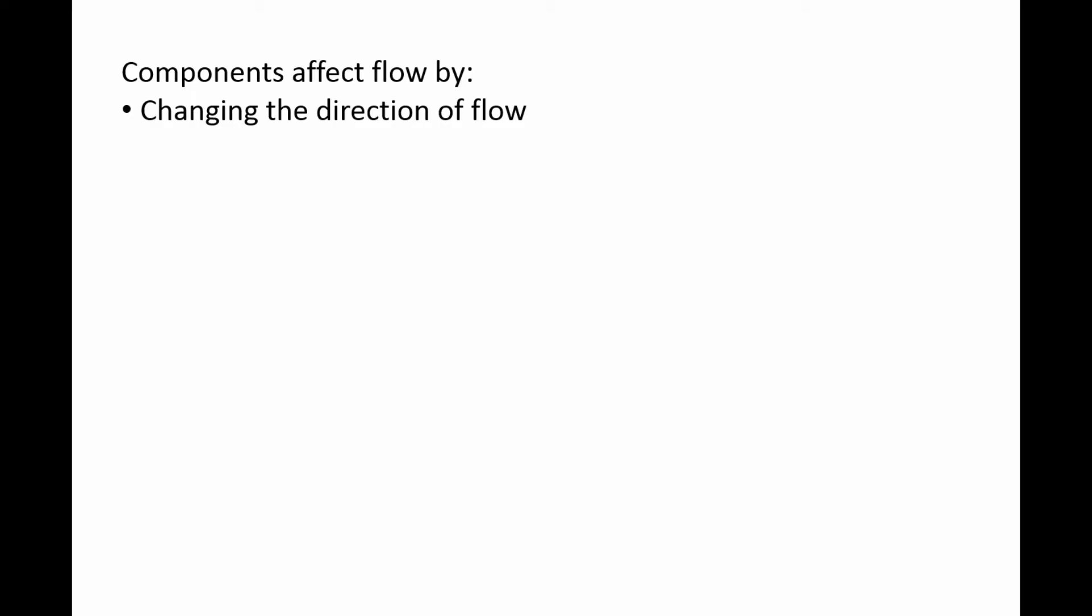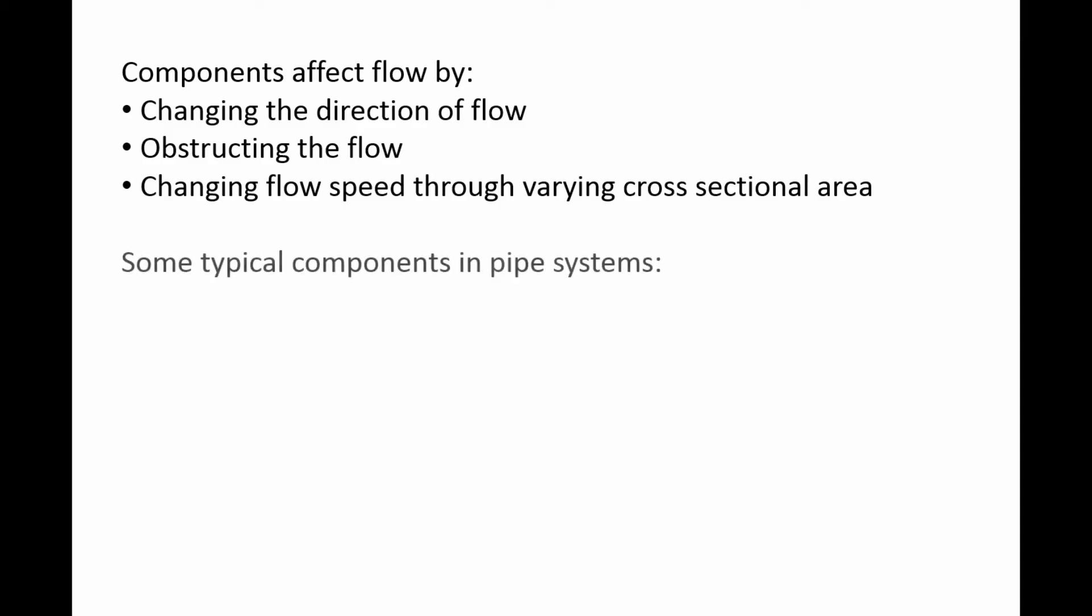In general, components affect the flow by changing the direction of flow, obstructing the flow, and changing flow speed through varying the cross-sectional area of the pipe system. Pipe systems may have many components.